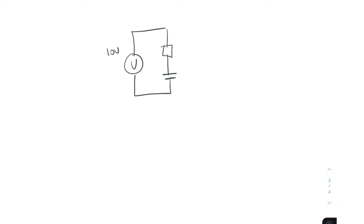Hi everyone, welcome back to another video. In this video we're going to be solving a very simple circuit that involves a resistor and a capacitor. We've got 10 volts at 5 kilohertz frequency — this is an AC voltage — a 1 kilohm resistor, and a 0.022 microfarad capacitor.